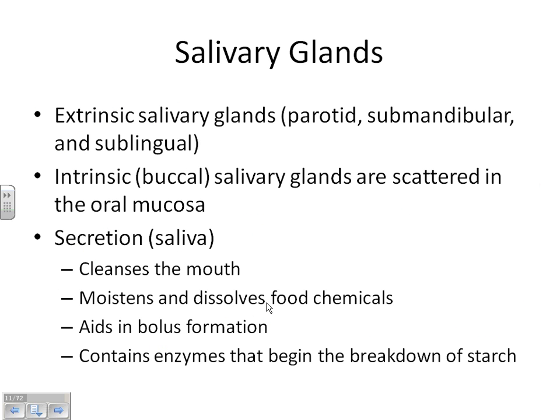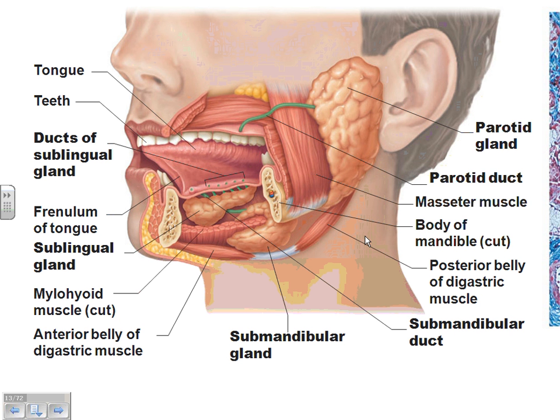Let's look at the salivary glands and what they're for. They make saliva, which keeps your mouth moist so your food will be moistened, and in order for your taste buds to work, your food has to be dissolved in saliva. Taste is an evolutionary trait we've kept — when you put something you're not supposed to have in your mouth, it generally tastes bad. Your saliva also has an enzyme that begins breaking down your sugars.